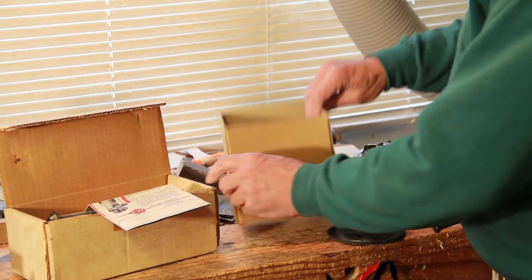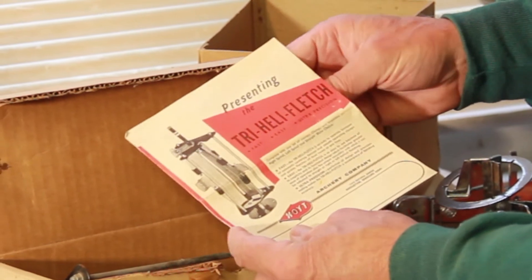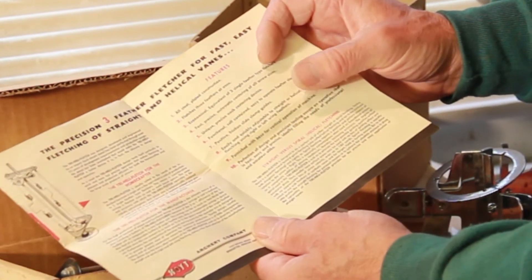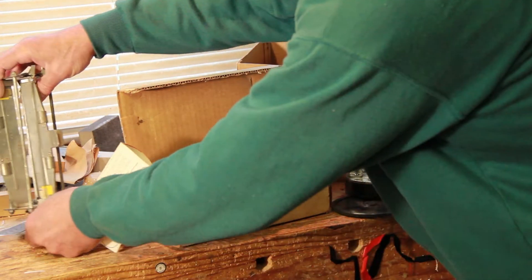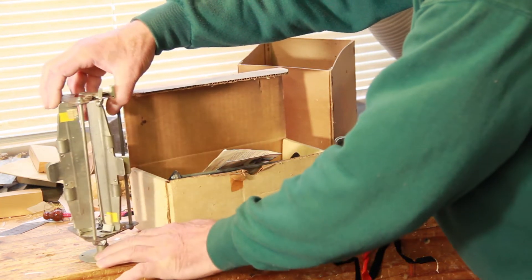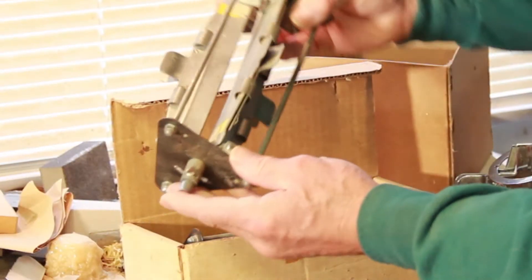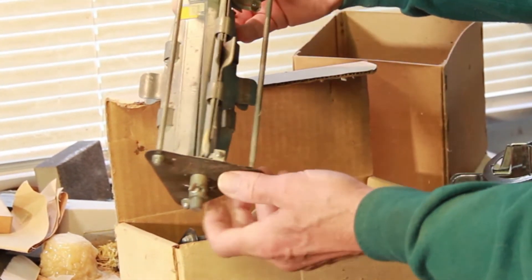The next one we've got here is a Hoyt Tri-Heli fletch and again comes with complete instructions. It's similar to this one—I seem to have two of them. It's still a metal construction, hasn't got the chromium plated finish, obviously a little bit cheaper, but it's a three fletch jig.